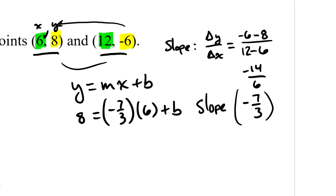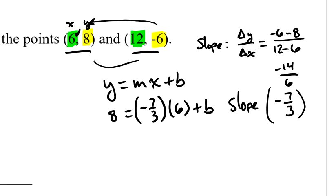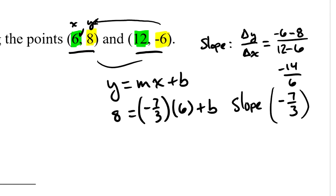So this is a nice equation. The only variable I have there is b, and when I solve for b, I'll know what my y-intercept is. Let's see. 6 divided by 3 is 2, and 2 times negative 7 would be negative 14. So I've got 8 equals negative 14 plus b.